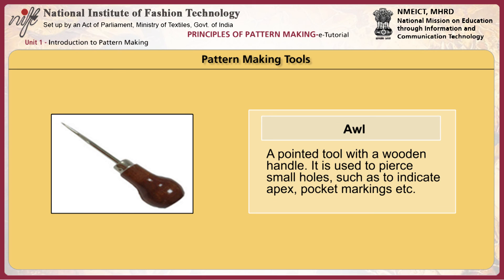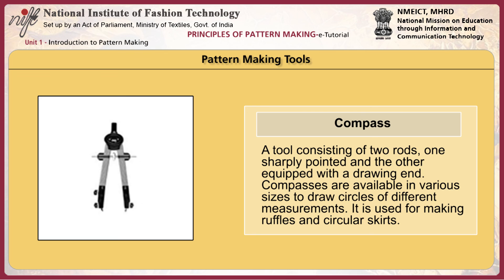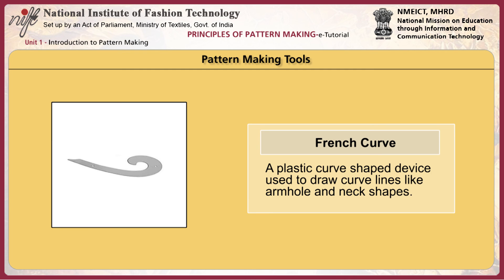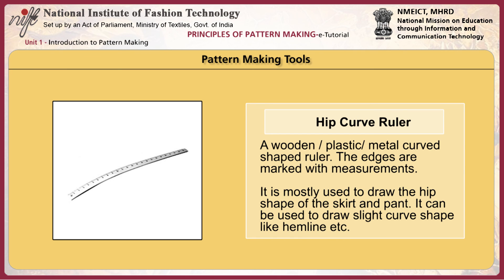The awl is a pointed tool with a wooden handle, used to pierce small holes to indicate the apex, pocket marking, etc. A compass is a tool consisting of two rods, one sharply pointed and the other equipped with a drawing end; compasses are available in various sizes to draw circles of different measurements and are used for making ruffles and circular skirts. The french curve is a plastic curved-shape device used to draw curve lines like armholes and neck shapes. The hip curve ruler is a wooden, plastic, or metal curved-shape ruler with edges marked with measurements, mostly used to draw the hip shape of skirts and pants, and also to draw slight curves like hemlines and armhole lines.